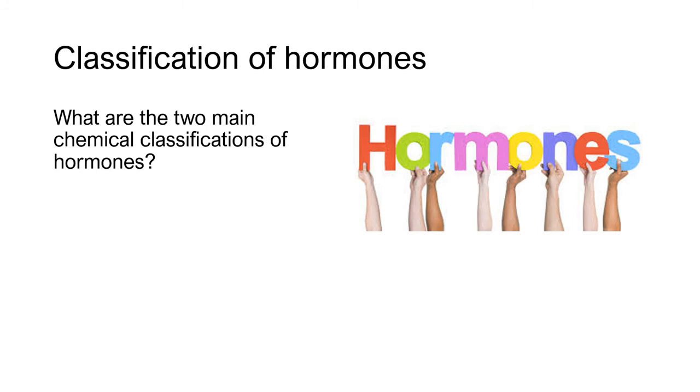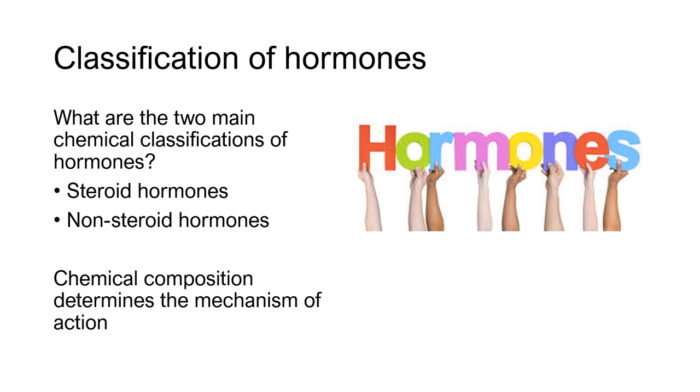Now, with regards to this, we can classify hormones in many ways. But for this class, we're going to just keep it pretty simple. We have steroid hormones and non-steroid hormones. And ultimately, what determines if they're a steroid or non-steroid hormone is their chemical composition. And this chemical composition also determines how they work.